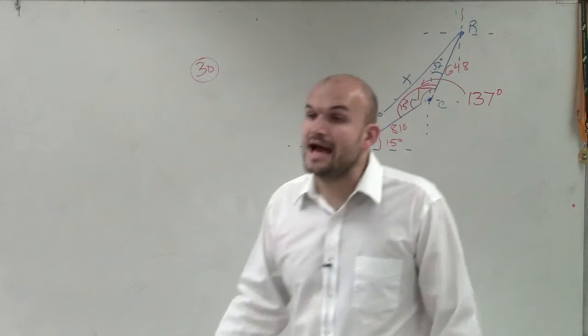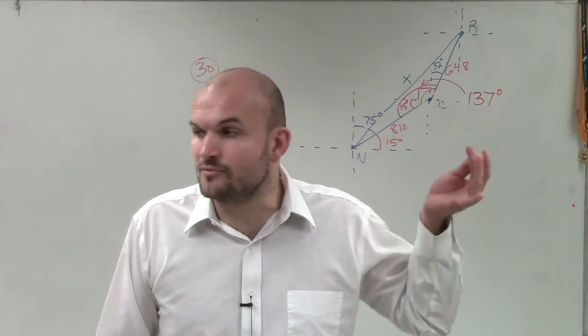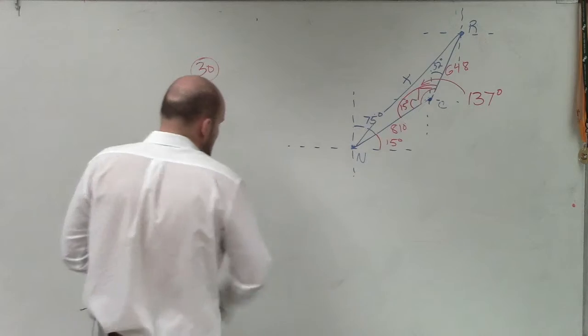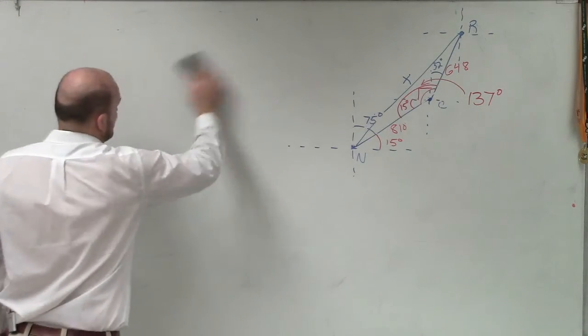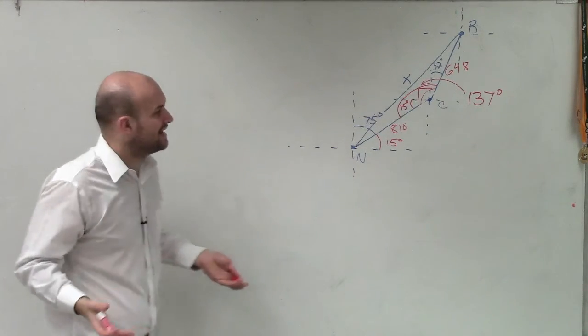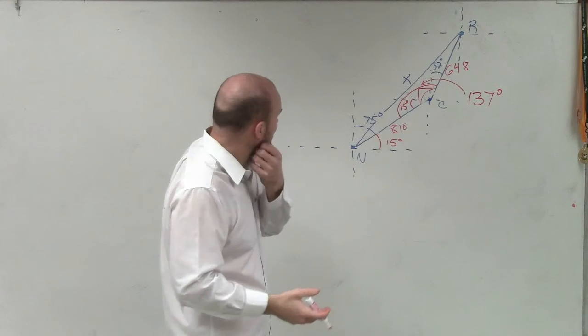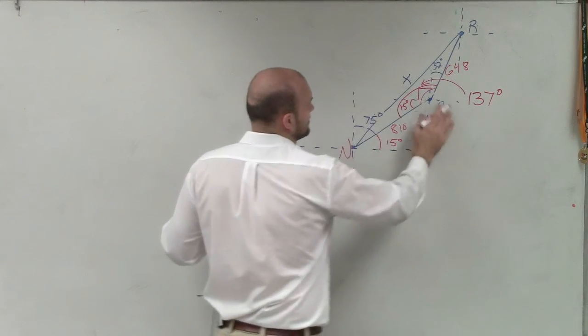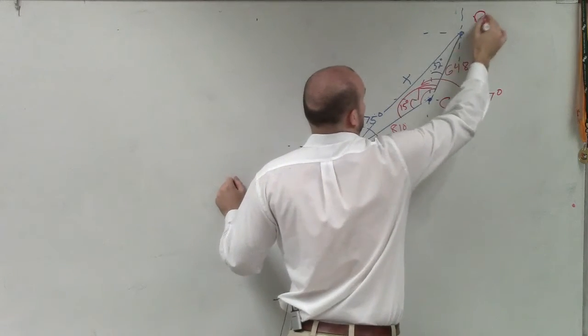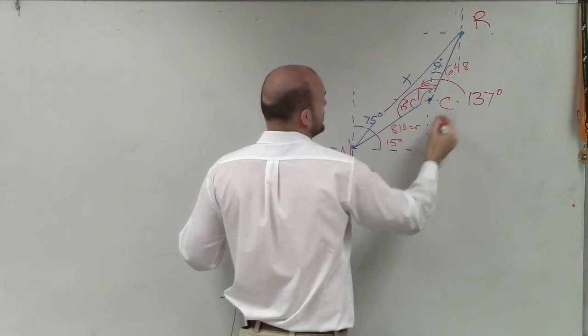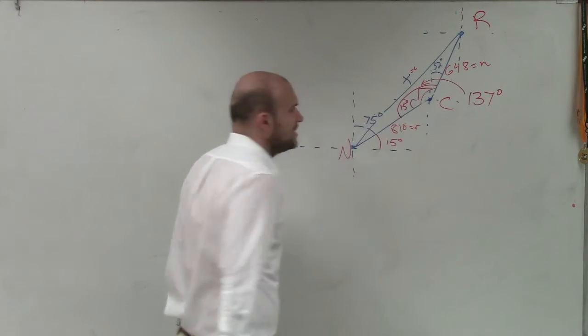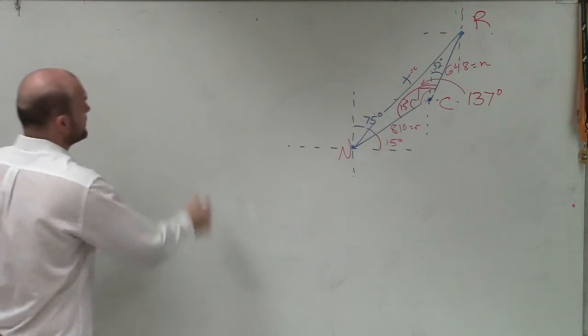So now to find the distance from Rosewood back over to Niagara, I have to use the law of cosines. So again, guys, I'm using all these. I'll call this angle n, I'll call this angle c, I'll call this angle r. That means that's little r, and that will be little n, and this will be little c. But anyway, so now I can just use the law of cosines.